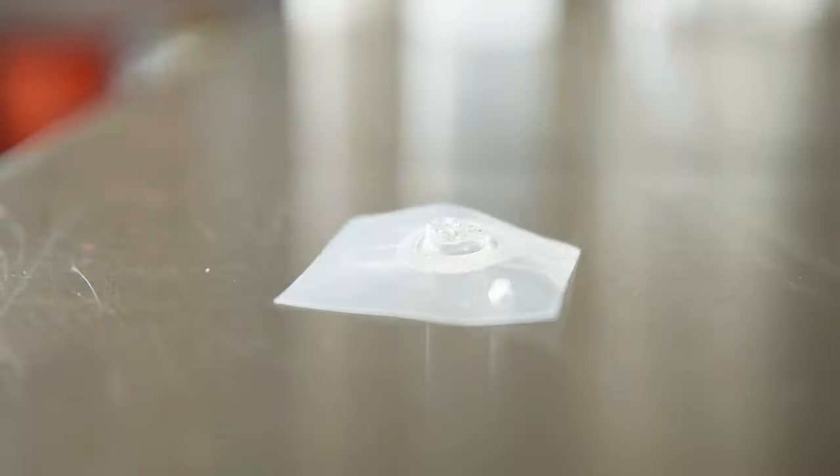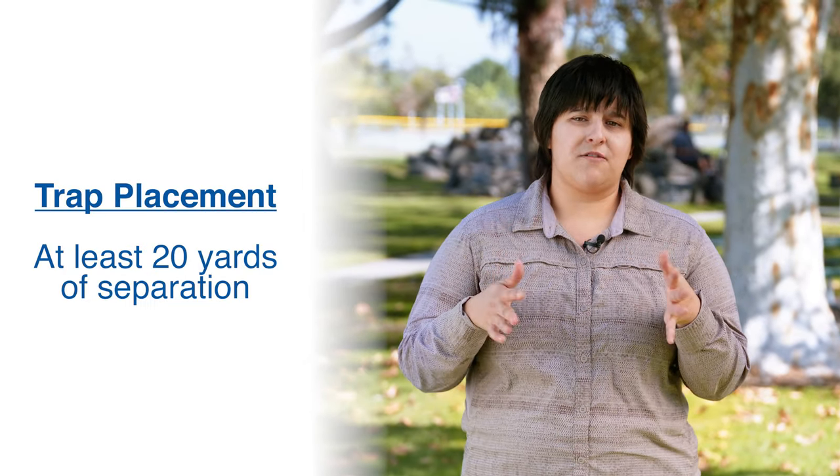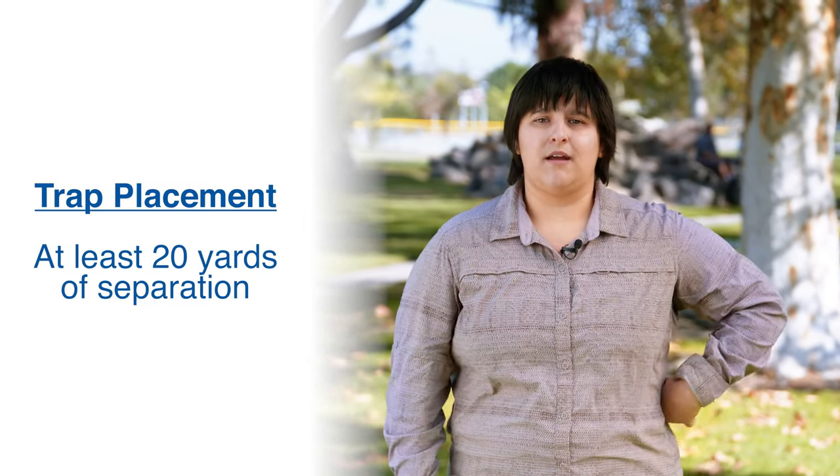Inside the lure package, you will find a sealed pouch containing a nickel-sized transparent membrane that is semi-permeable to allow the slow release of the chemical scent — this is the lure. Do not open the pouch. Also note that traps shouldn't be placed too close together; a separation of at least 20 yards is recommended.